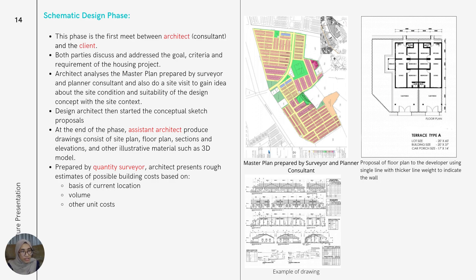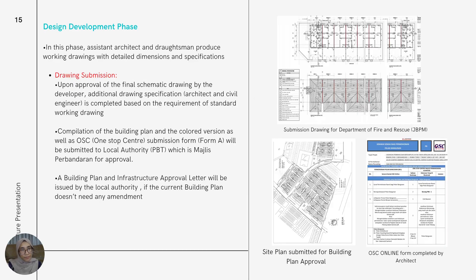This process continues until the developer or client approves the designs. By the end of this stage, the architect will produce complete drawings consisting of a site plan, floor plan, sections, elevations, and other illustrative methods such as 3D models. Based on a schedule prepared by a quantity surveyor, the architect shall also present a rough estimate of possible building costs based on current location, volume, and other unique factors.